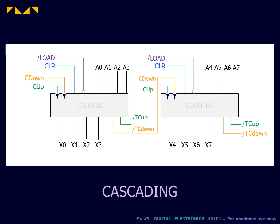The terminal count outputs permit the cascading of ICs in order to extend the number of bits. To perform cascading, the terminal count up output is connected to the count up trigger of the next stage. And the terminal count down output is connected to the count down trigger of the next stage.